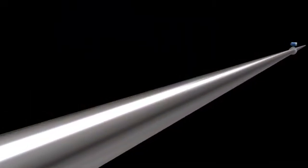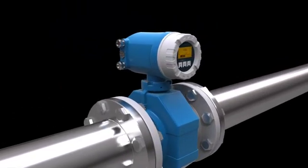The fluids flowing through pipes often have completely different properties. Consequently, there are different principles for their measurement. One method is flow measurement based on the electromagnetic principle.